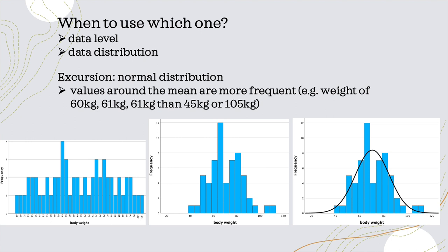Let me move on to the question of when to use which measure of central tendency and its corresponding measure of dispersion. The data level will indicate which one to use — for example, the mode is used for categories to find the most frequent one. The mean and the median can be used for discrete and continuous variables. Another aspect is the data distribution, which will guide the choice between median and mean.